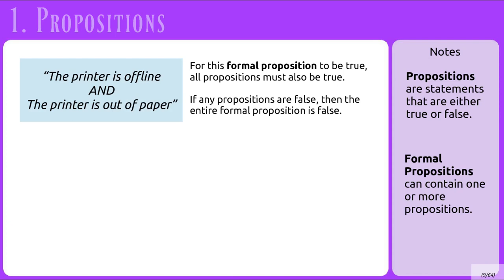With the formal proposition 'the printer is offline AND the printer is out of paper,' we have two propositions. Because we're using two propositions, there are four possible states, just like with our coin flips from earlier. The printer is offline AND out of paper; the printer is online AND has paper; the printer is offline BUT has paper; and the printer is online BUT out of paper.